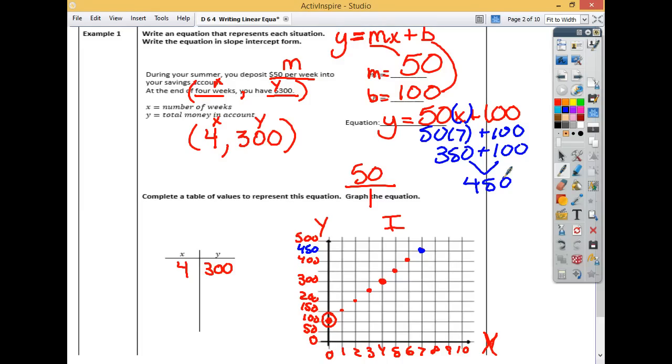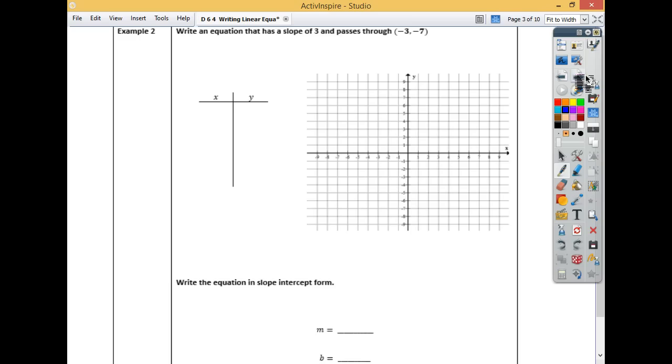That's one way of finding the b, if they give you the slope and the point. You can always, if there's a graph, you can put it on a graph and find it. Now there's another way that I can show you how to find it if you don't have a graph. Well, I guess we have practiced one more graph.